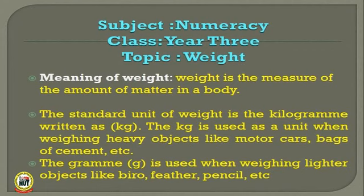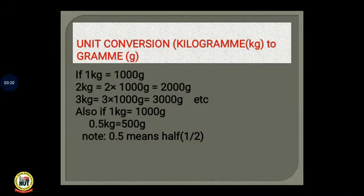For example, if I want to weigh a sheet of paper, after getting the actual weight, the unit is going to be gram, not kilogram, because the kilogram is used for weighing heavy objects. In unit conversion, you have two units when measuring weights: the kilogram and the gram. The kilogram is bigger than the gram.